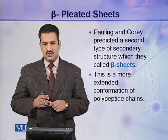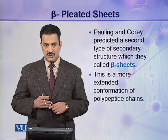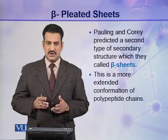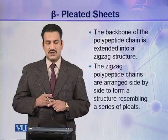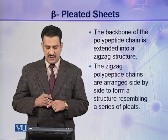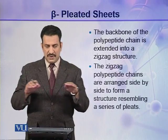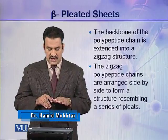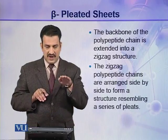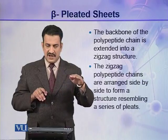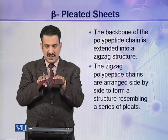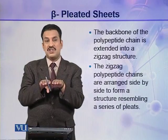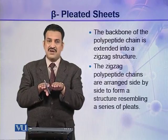Pauling and Corey predicted a second type of secondary structure which they called beta sheets, or generally beta conformations. This is a more extended conformation of a polypeptide chain as compared to the alpha helix. In beta sheets, the backbone of the polypeptide chain is extended into a zigzag structure, and these zigzag polypeptide chains are arranged side by side, resembling a pleated sheet — that's why these structures are called beta pleated sheets.